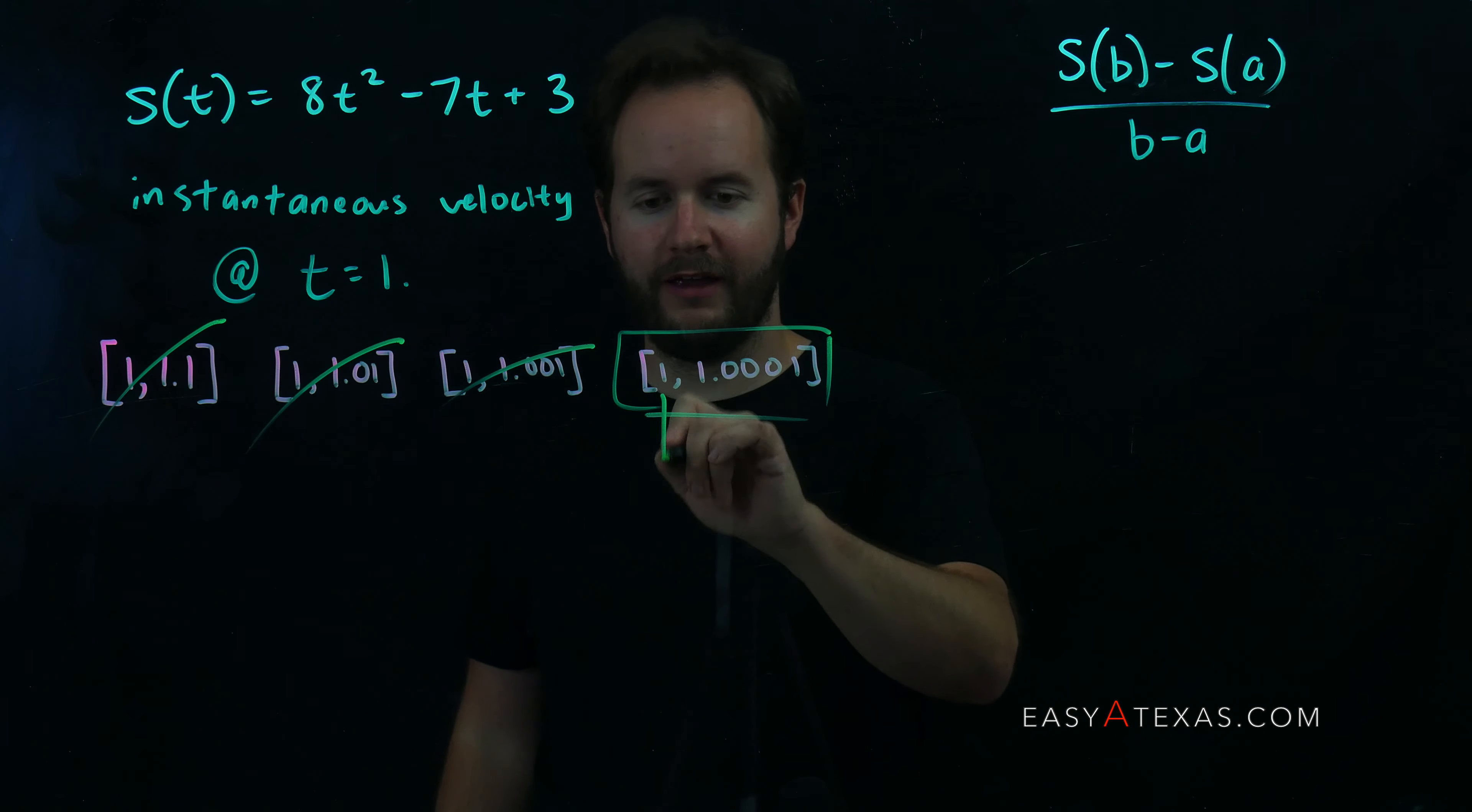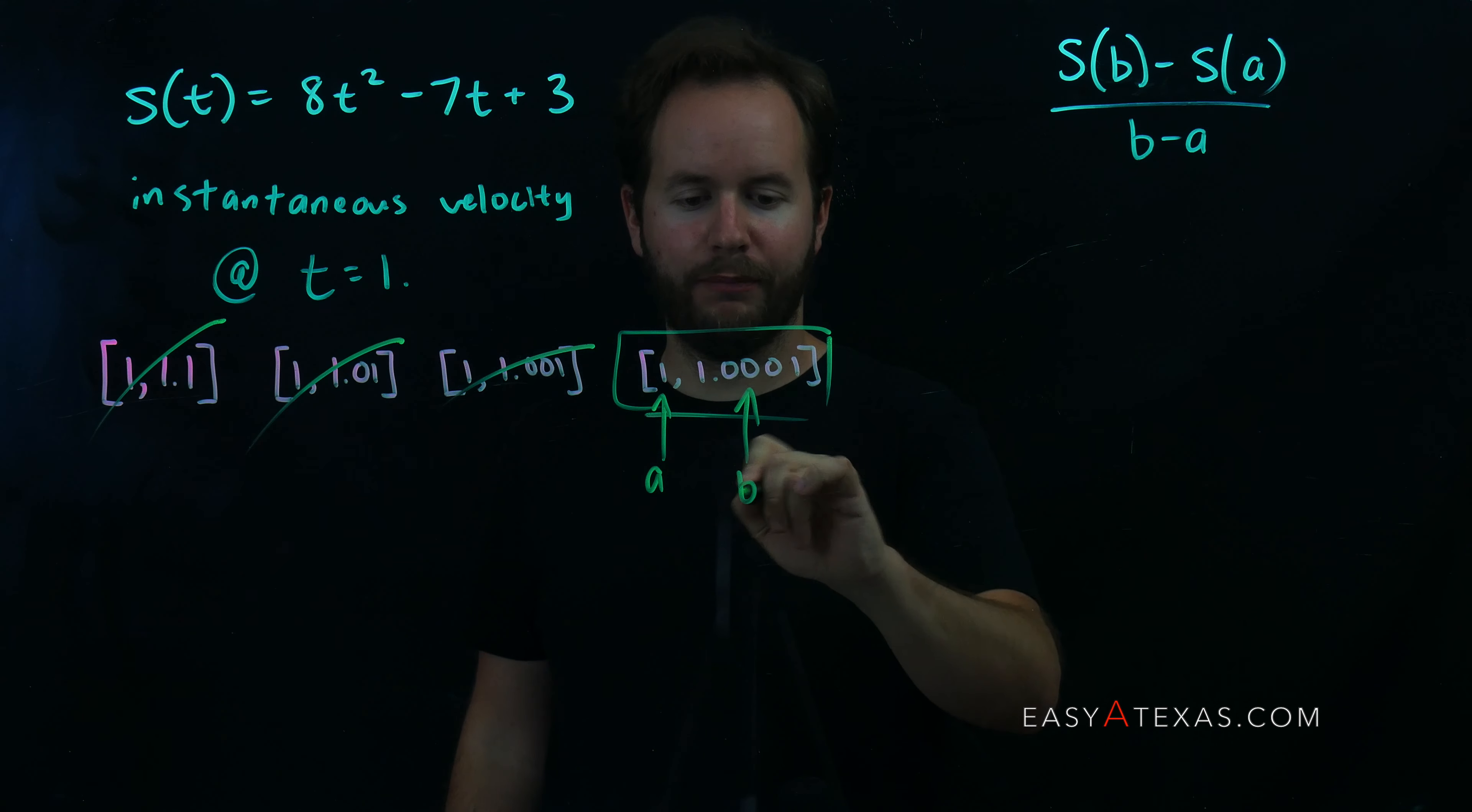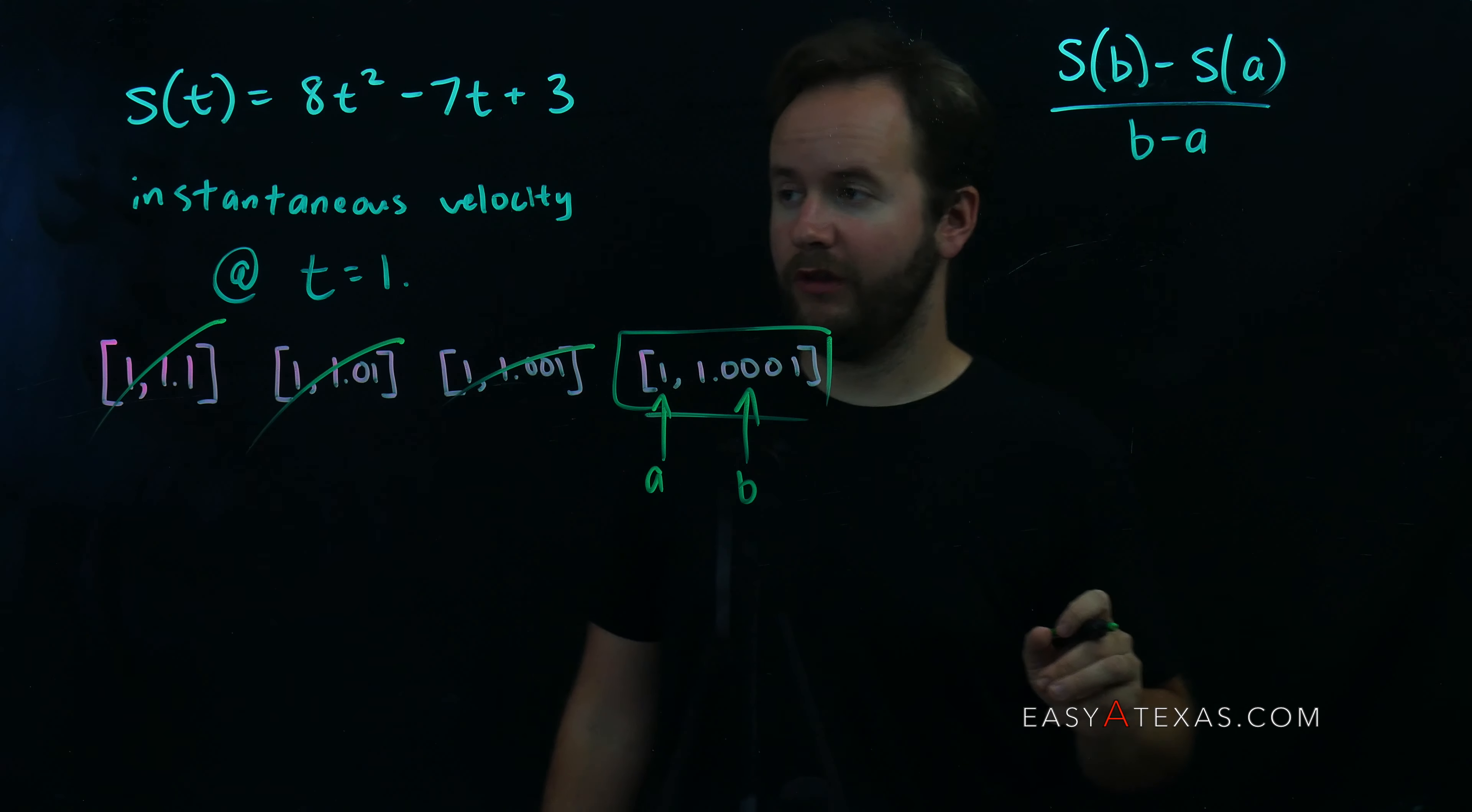So we're going to use these two numbers, this guy's a and this guy's b. We're going to plug them into our handy-dandy average velocity formula.